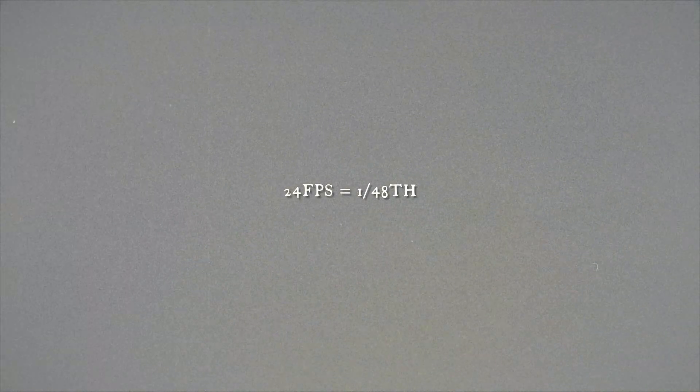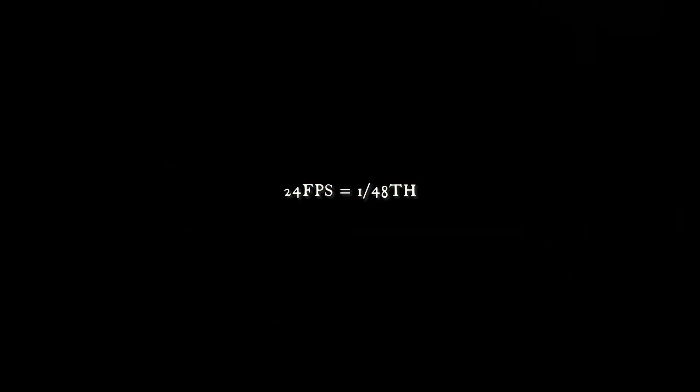Now that you know what they do, I'm going to explain why they are necessary. They're necessary because you want to choose the correct shutter speed in accordance with the frame rate you have chosen. This is important because you want to have natural-looking motion blur in your films, because no one wants to look at choppy footage. For these shots I'm at about 30 frames per second, which means I need to set my shutter speed to 1/60th of a second. The general rule is to double your frame rate — so if I was filming in 24 frames per second, I would want to set my shutter speed to 1/48th of a second.